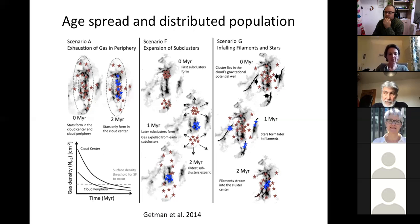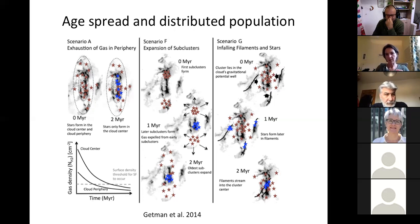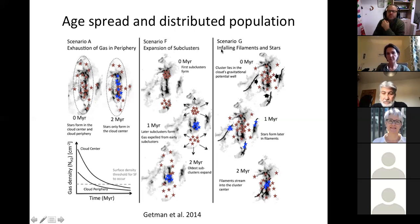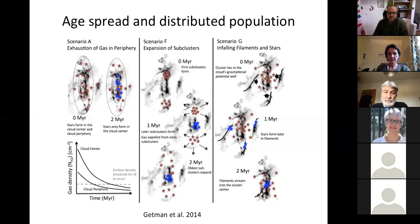That's exactly the kind of question we are trying to address — whether regions start from the same initial state and evolve differently, or whether we see two genuinely different scenarios of star formation: one corresponding more to associations like Taurus, and another corresponding to massive, concentrated stellar clusters.